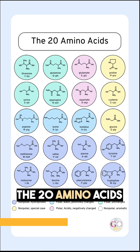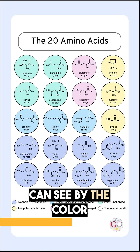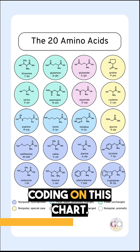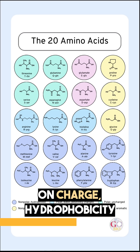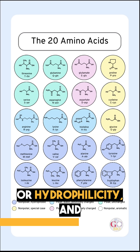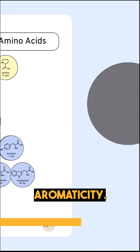The 20 amino acids are classified into various groups, as you can see by the color coding on this chart. They are organized based on charge, hydrophobicity or hydrophilicity, and aromaticity.